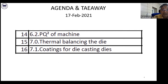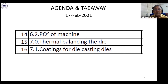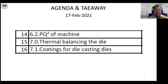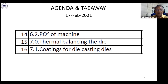The next day we will continue with the PQ square diagram of the machine. Then thermal balancing — thermal balancing is very important for getting production parts at the required volume — because the die is heated to 680–700 degrees centigrade within one minute, then cooled again, then heated again.